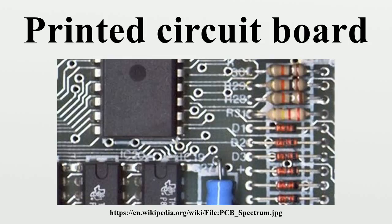Printed circuit boards are used in all but the simplest electronic products. Alternatives to PCBs include wire wrap and point-to-point construction. PCBs require the additional design effort to lay out the circuit, but manufacturing and assembly can be automated. Manufacturing circuits with PCBs is cheaper and faster than with other wiring methods, as components are mounted and wired with one single operation. Furthermore, operator wiring errors are eliminated. When the board has only copper connections and no embedded components, it is more correctly called a printed wiring board or etched wiring board.